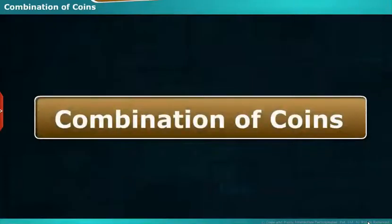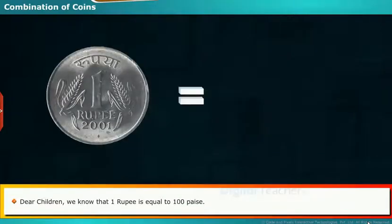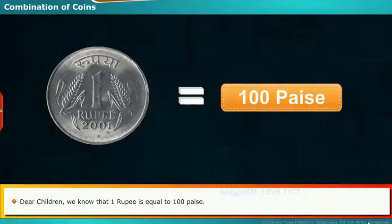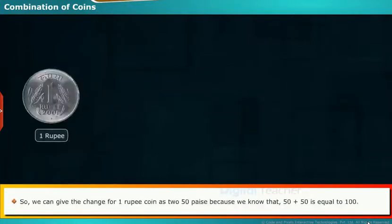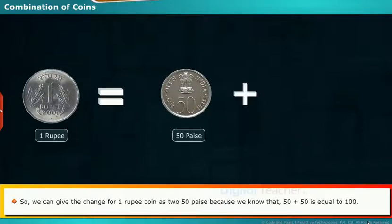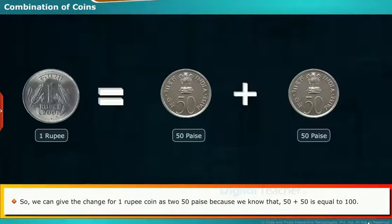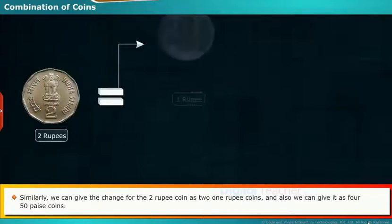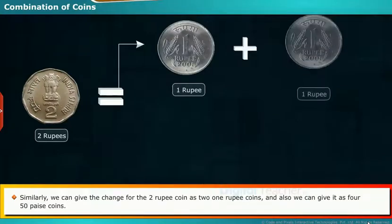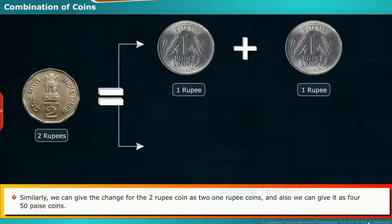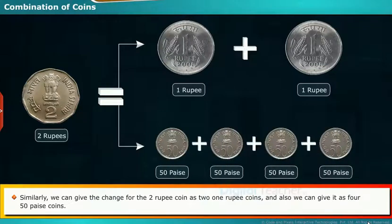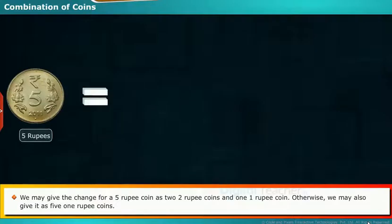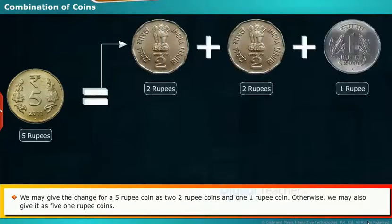Combination of Coins: Dear children, we know that 1 rupee is equal to 100 paisa. So we can give the change for 1 rupee coin as 2 fifty-paisa coins, because 50 plus 50 equals 100. Similarly, we can give the change for the 2 rupee coin as 2 one-rupee coins, and also as 4 fifty-paisa coins.